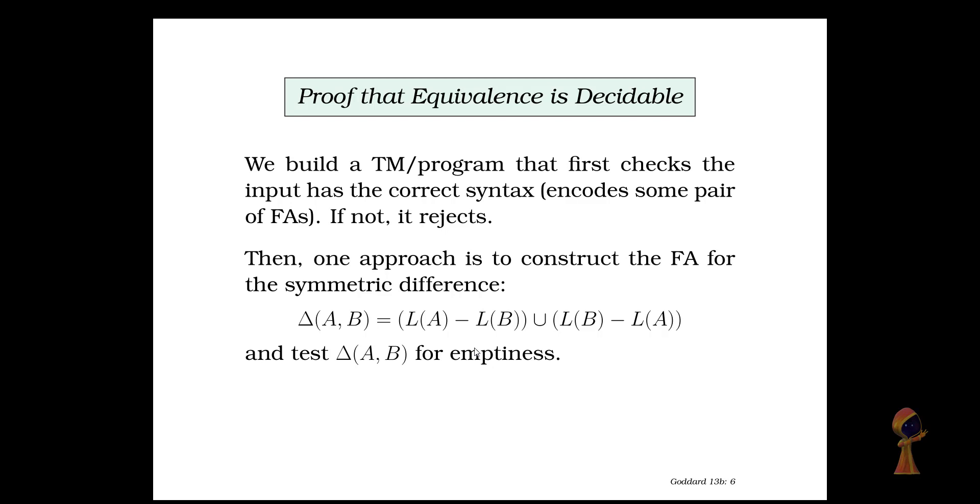In part C we're asking to check if two finite automaton accept the same language. How do we do this? We can construct the finite automaton for the following language which is called delta AB. Delta means the symmetric difference.